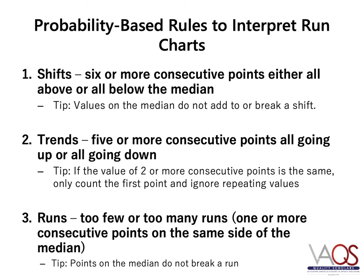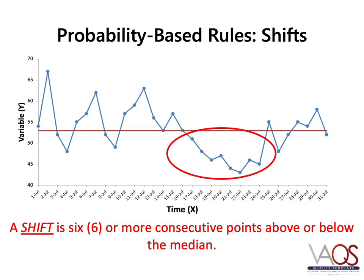Experts recommend that you have at least 10 data points to establish a median on a run chart. This run chart provides an example of a shift. As you can see, there are eight consecutive points that are all below the median, which means that there was a statistically significant change in the process.